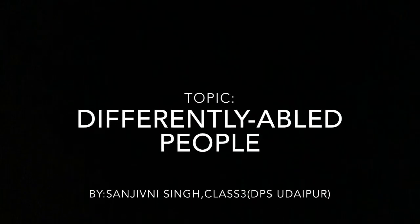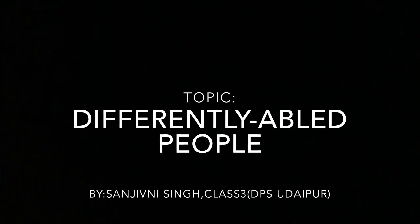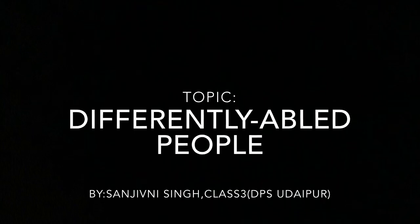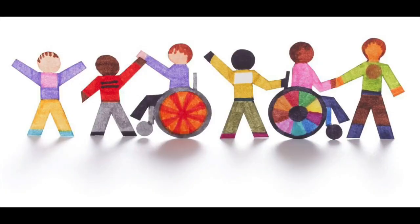Hello students, today I will explain about differently abled people. So children, differently abled people are some people who cannot see, who cannot hear, who cannot speak, or who cannot walk like everyone else. They are differently abled people.